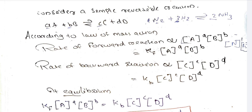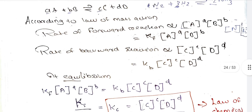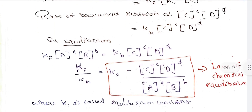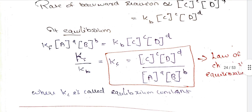The backward reaction is also directly proportional to the concentrations of the products. At equilibrium, KF is the forward reaction rate constant and KB is the backward reaction rate constant. The equilibrium constant KC represents the concentration constant.